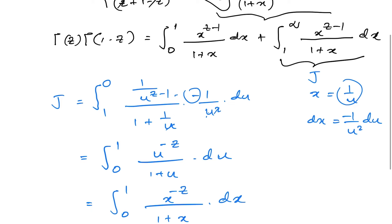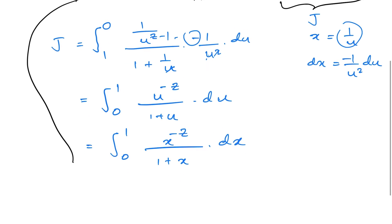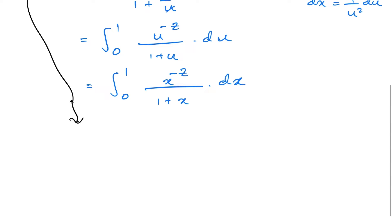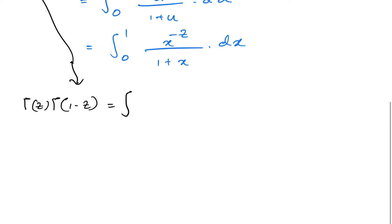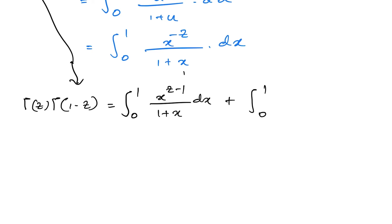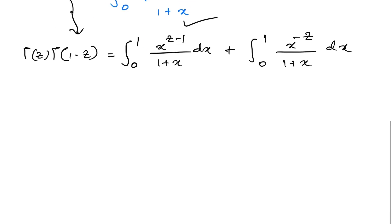So now we have gamma(c)·gamma(1-c) equal to the integral from 0 to 1 of x^(c-1) over (1+x) dx plus the integral from 0 to 1 of x^(-c) over (1+x) dx.